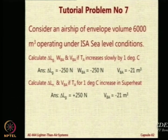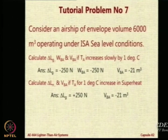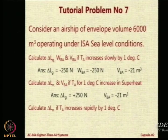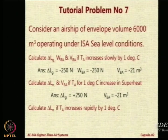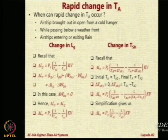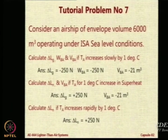The only difference that will happen is in the numerical value. In one case there is an increase, in one case there is a decrease, but the number remains the same. What happens if this is rapidly done, not slowly? For rapid change, it is the same — the formula is the same.